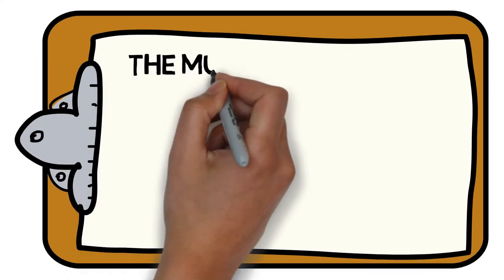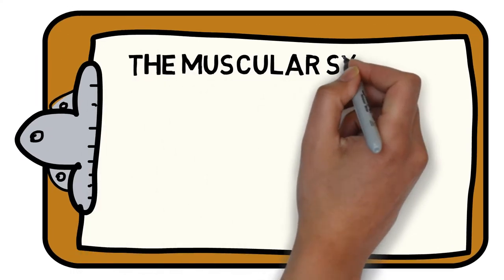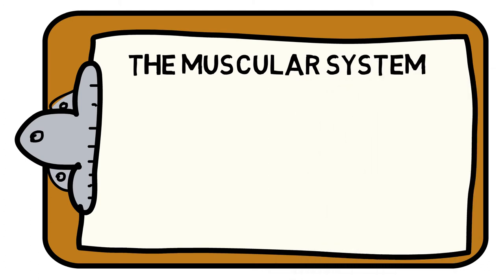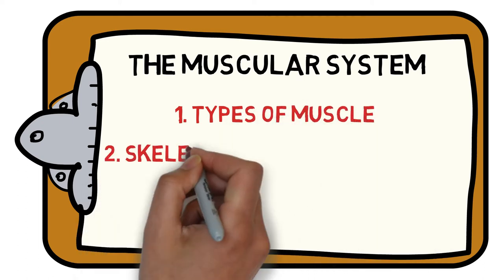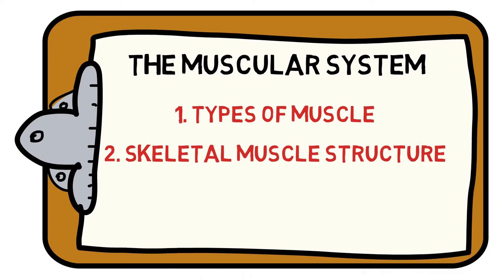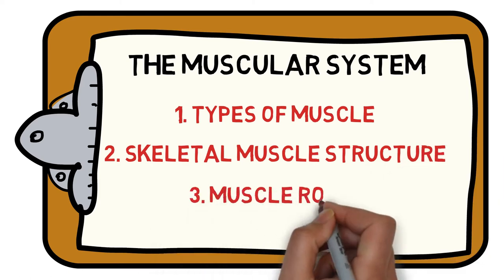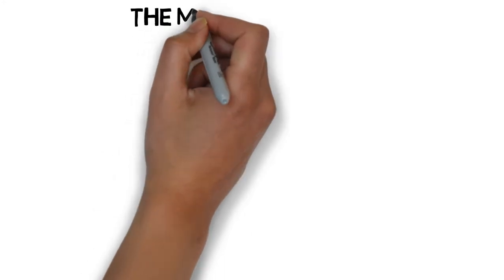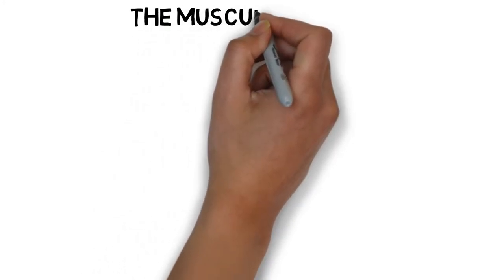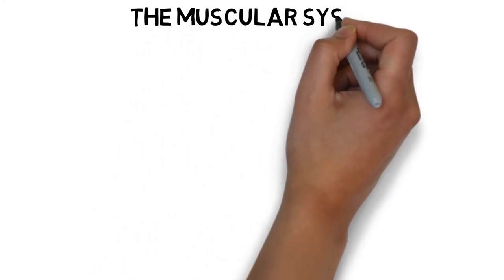Welcome to the Sports Science Hub's guide to everything you need to know about the fundamentals of the muscular system. We will help you understand the different types of muscles we have throughout the body, the structural makeup of skeletal muscle, and the various roles a muscle can perform depending on the demands of the activity. The muscular system is a series of muscles throughout the body that contract and relax in order to produce movement and provide support, just like a complex pulley system.